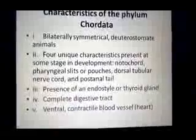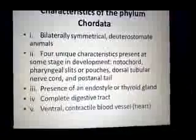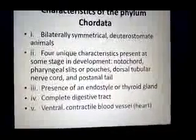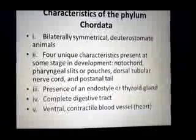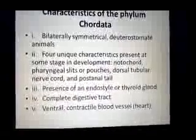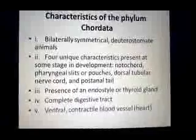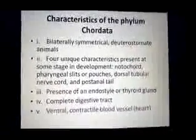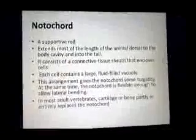Additional characteristics include the presence of an endostyle or thyroid gland, a complete digestive system consisting of the mouth and different other parts ending at the anus, and a ventral contractile blood vessel called the heart — the circulatory system present in Phylum Chordata.